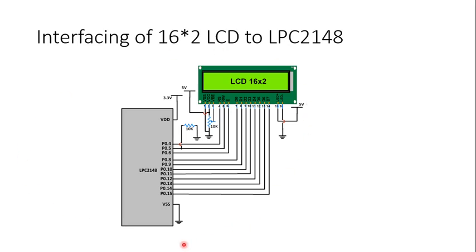This is the interfacing diagram for the LCD. We have used Port 0 here. P0.4 is connected to RS, P0.5 is connected to the RW read/write signal, and P0.6 is connected to the enable signal. This is very important when writing the program — RS, RW, and enable are connected to pins 4, 5, and 6 respectively. From pin number 8 to pin number 15, these 8 pins are connected to D0 to D7.